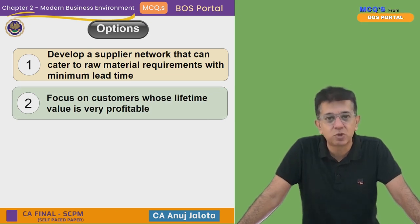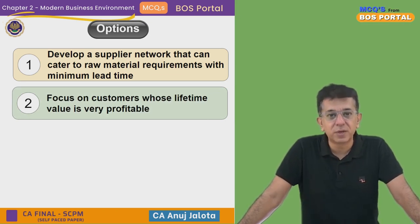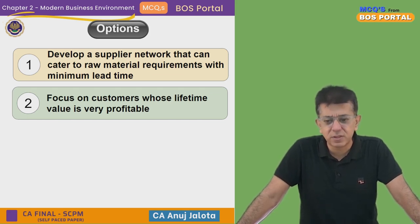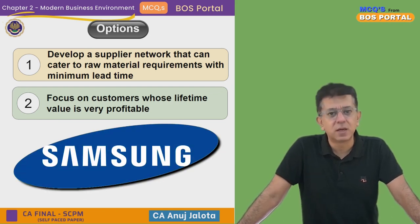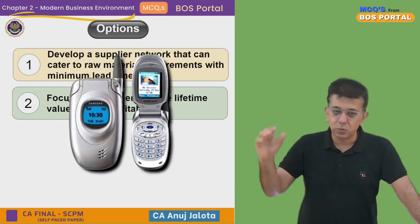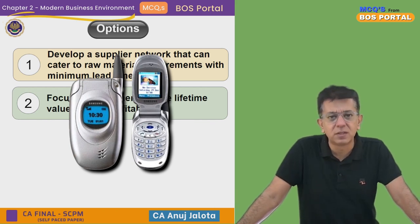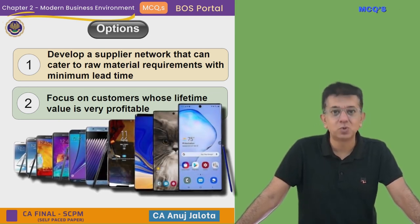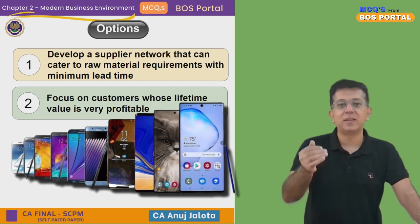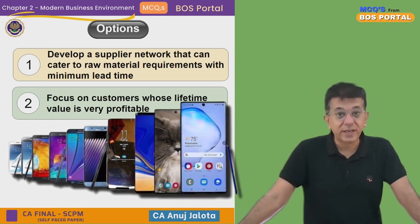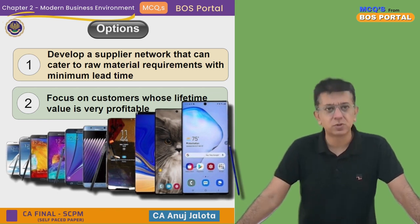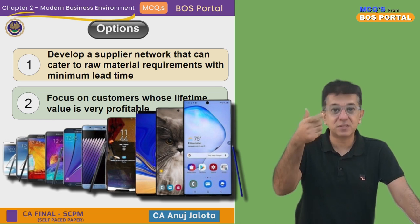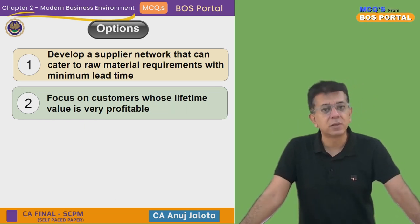Lifetime value actually means the total amount that you earn from a customer over the entire lifetime of the customer — that is, till the time the customer remains with you. For example, I buy phones only from Samsung. From 2002 I have bought their Blue phone, then Note 2, Note 3, Note 6, Note 8, Note 10, then they upgraded to 20, then 22, and the latest ones too. So the total amount Samsung has earned from me is Samsung's customer lifetime value for me.